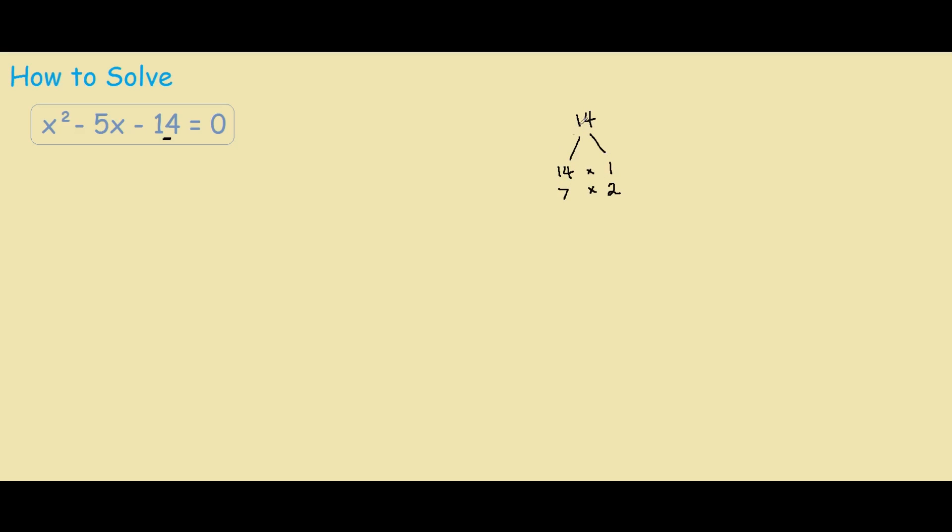So, to find a suitable factor, we need to look at two numbers which multiply to give us negative 14, and when added together, gives us negative 5. So straight away, I look at this 7 times 2, and I see that if we put a negative sign here, we have negative 7 times 2 equals negative 14, and negative 7 plus 2 equals negative 5. So therefore, those are our two factors.